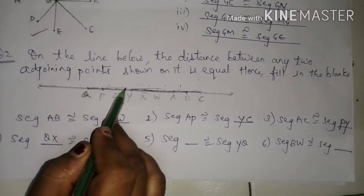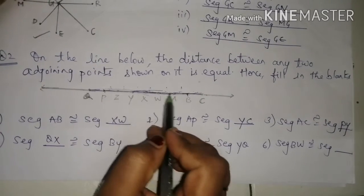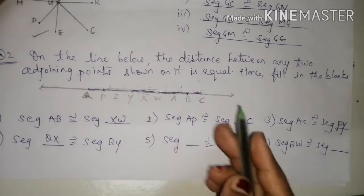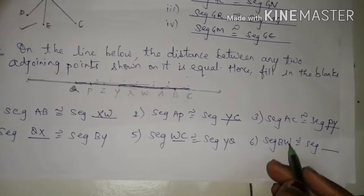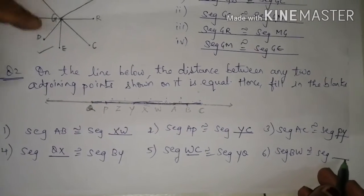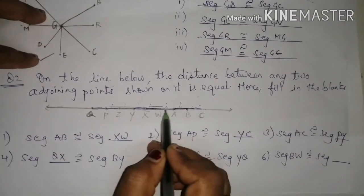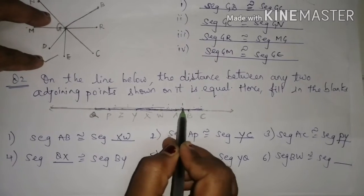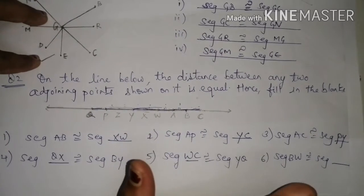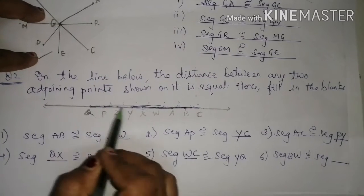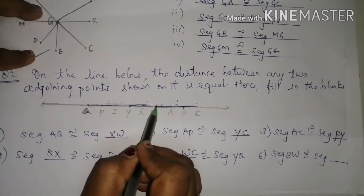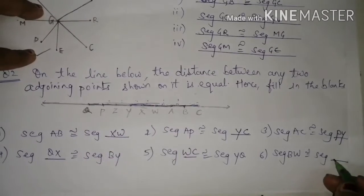YQ is 3 units distance, so I can take WC: 1, 2, 3 — that works. For the last blank: segment BW is congruent to segment dash. From B to W the distance is 1, 2 — that is 2 units. So I will take YW: 1 and 2. That gives us our answer.